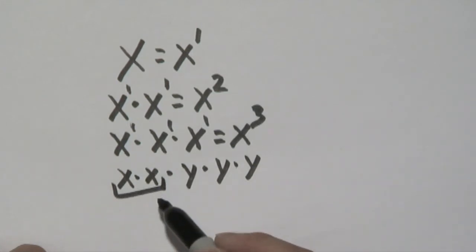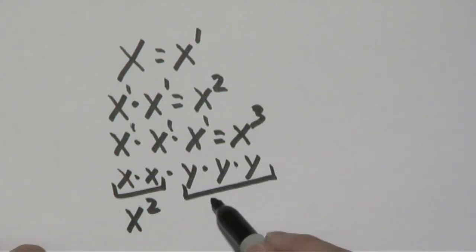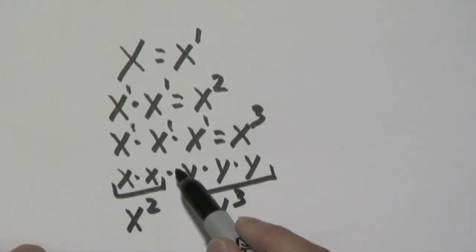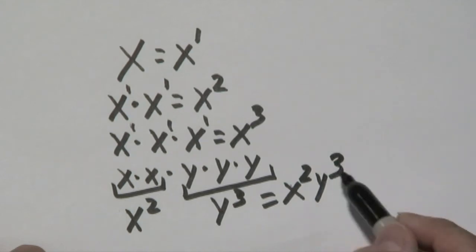For example, if you have x times x, they'll get to x squared, and y times y times y, you'll have y to the third. So when you have these terms, you'll have in the end x squared y cubed.